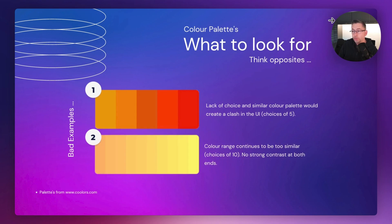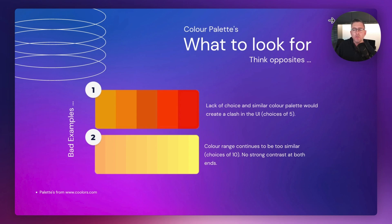Now let's have a look at some bad examples. In number one, there's not really much range — putting the color on the left side against the right side is just going to clash and look dreadful in the UI. You could get away with the light orange working with maybe a tertiary color, but you just haven't got much to work with and will probably end up with something that looks ghastly. In number two, the palette is really quite light on both sides, which will probably really annoy your users.